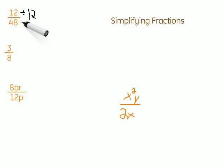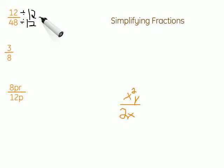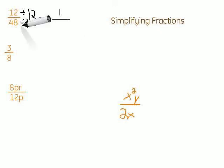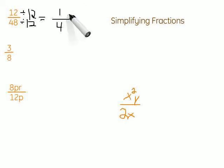So we're going to divide by 12 on top and divide by 12 on the bottom. That gives us 12 divided by 12 is 1, and 48 divided by 12 is 4. There's no number that we can divide 4 and 1 by except for 1, so we have a simplified fraction.